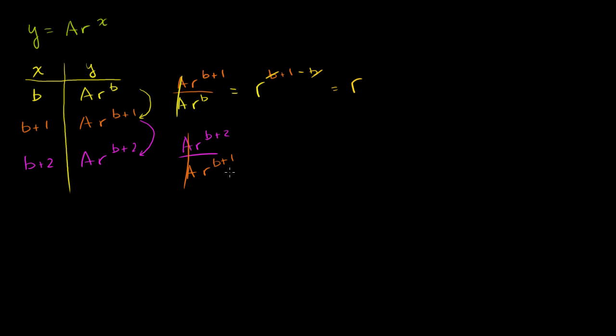Divide it by a r to the b plus 1. These cancel out. And we're left with r to the b plus 2 minus b plus 1, which is equal to r to the b plus 2 minus b minus 1. These cancel out. 2 minus 1. Once again, you're just left with r.